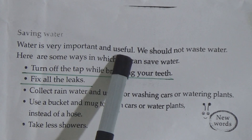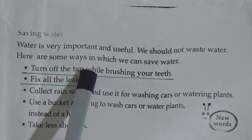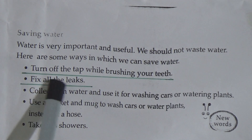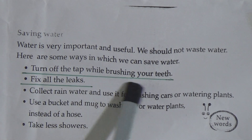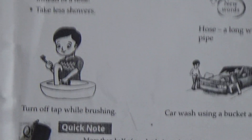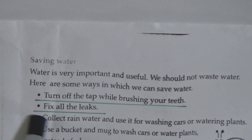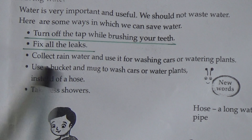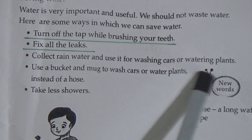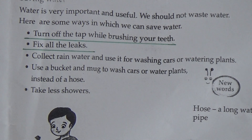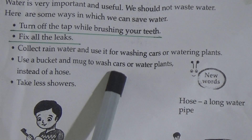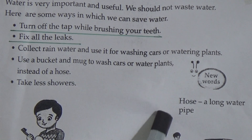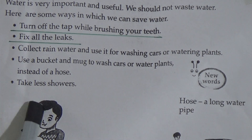Now our topic is saving water. Water is very important and useful; we should not waste it. Here are some ways to save water: turn off the tap while brushing your teeth — underline this line. Fix all leaks. Collect rainwater and use it for washing cars or watering plants. Use a bucket and a mug to wash cars or water plants instead of a hose. Take less showers.